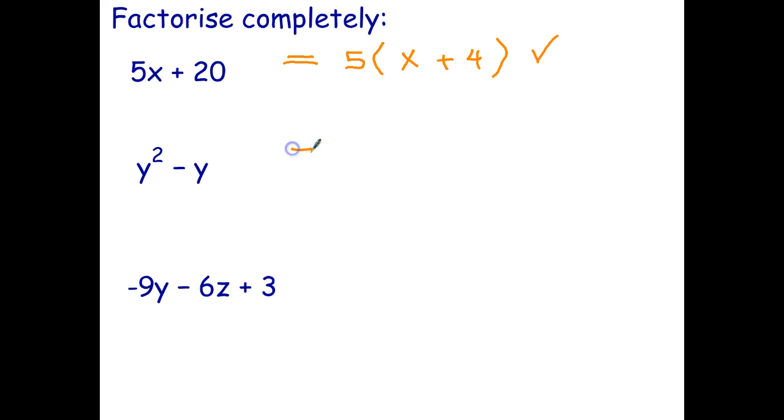Looking at the second one. Well there's no numbers that we have to take out as a common factor. Let's look at the y's. I got two y's there and one y there. So I can take one y out as a common factor. I can't take out two y's because this doesn't have two y's. In other words y times y. So I take out a single y as a common factor. y times what gives me y squared. Well y times y is y squared. And y times what gives me y. That has to be y times 1.